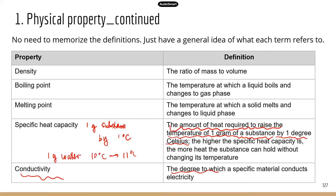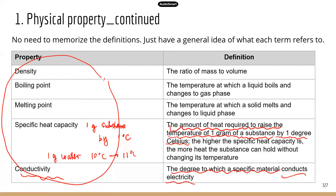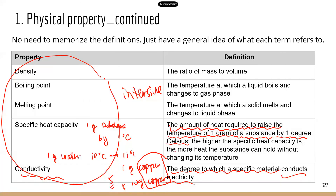Conductivity is about the degree to which a specific material conducts electricity — basically how well a material can conduct electricity. When we need material to make wires, we want the material to have high conductivity so it can conduct electricity better. All the physical properties in this table are intensive physical properties, meaning these properties do not change regardless of how much substance you have. If you have one gram of copper, the conductivity is, say, five. And if you have 10 grams of copper, the conductivity is still five, because it's the same substance — copper. The amount does not affect the specific conductivity for copper.